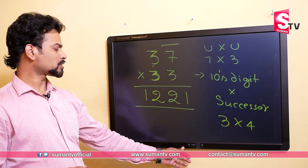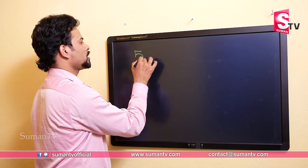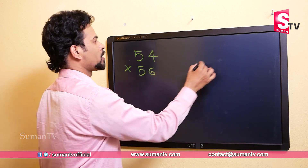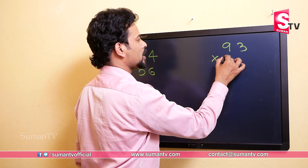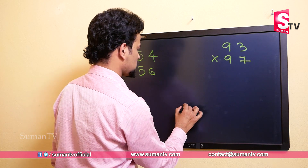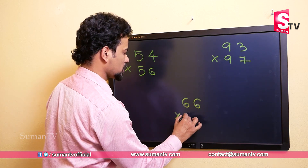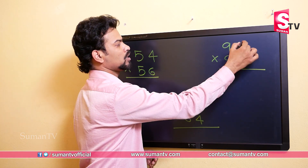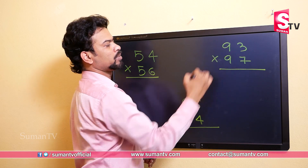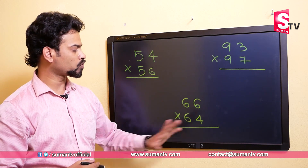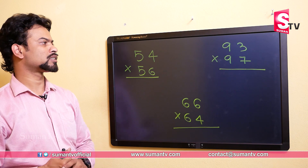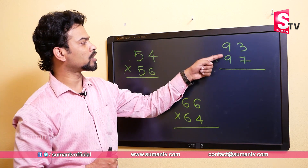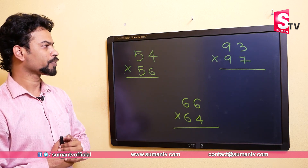Let's try some more questions: 54 multiplied by 56, 93 multiplied by 97, and 66 multiplied by 64. In all three cases, adding the units gives 10: 4+6=10, 3+7=10, 6+4=10 — first condition satisfied. And the tens digits are the same in each pair — second condition also satisfied. So we will use the same trick.